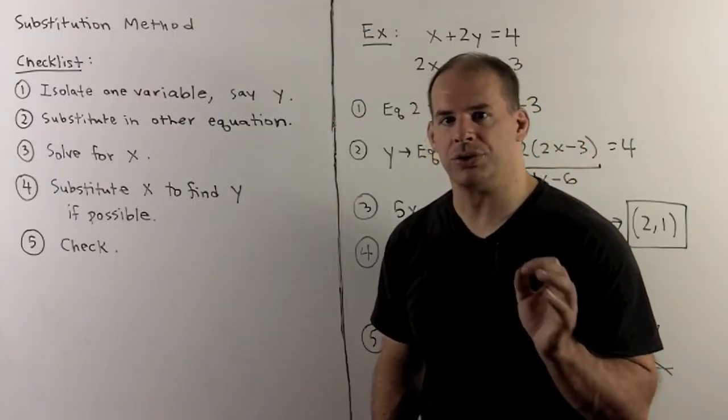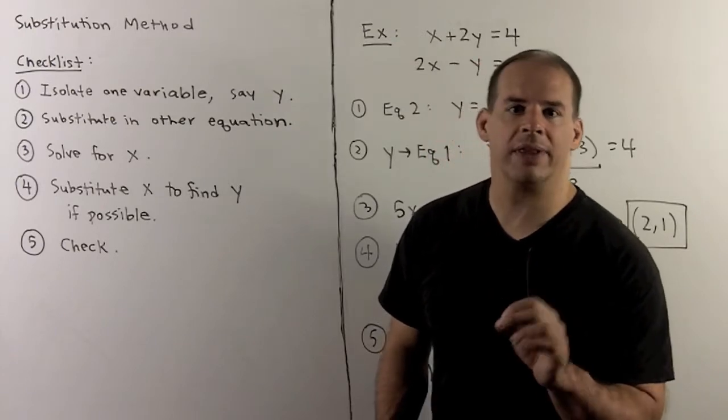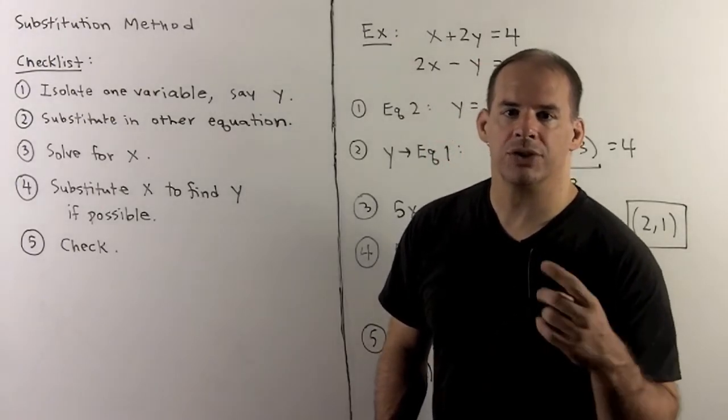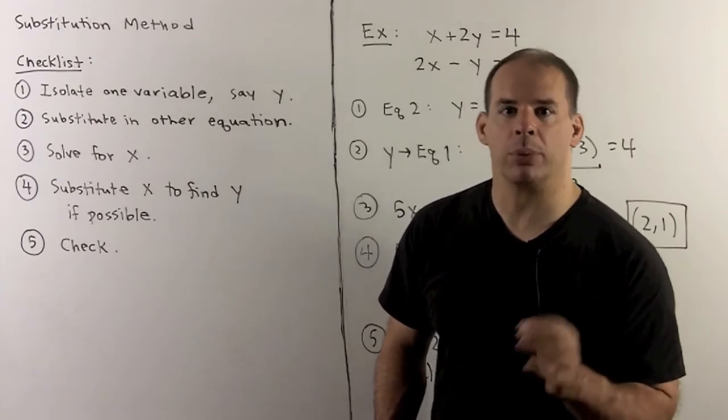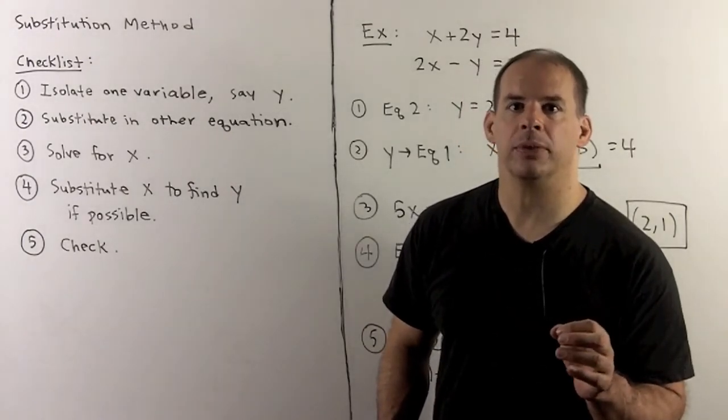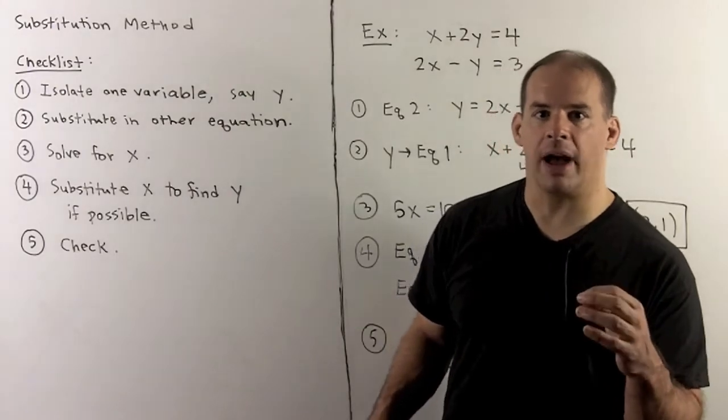When solving systems of linear equations in two variables, the graphing method is not 100%. We don't want to guess at a solution using a picture when we have more precise methods. We look at those precise methods now.